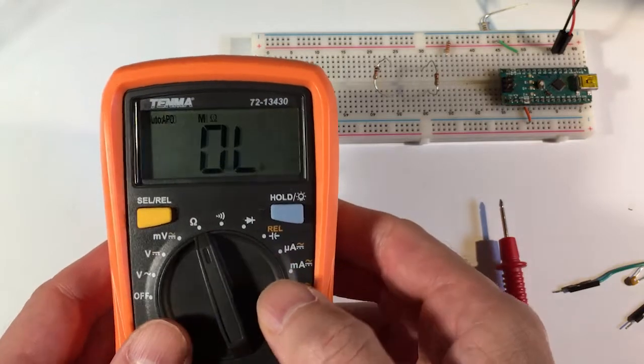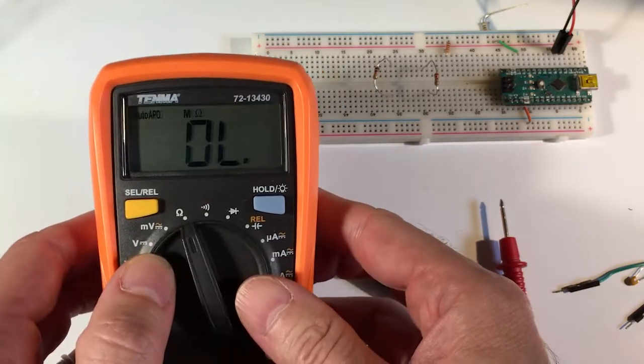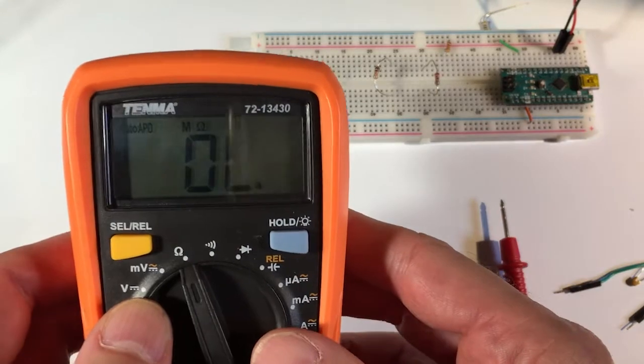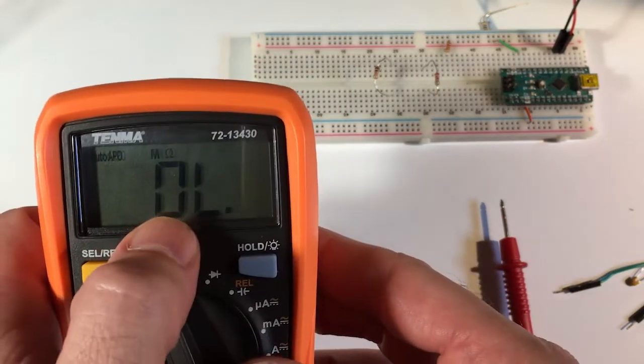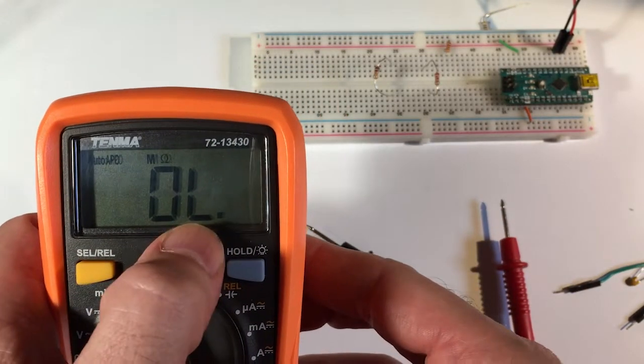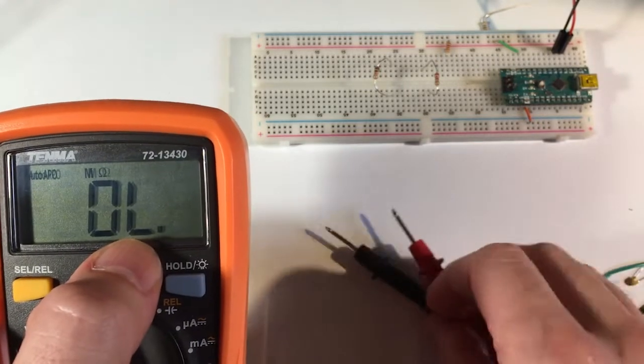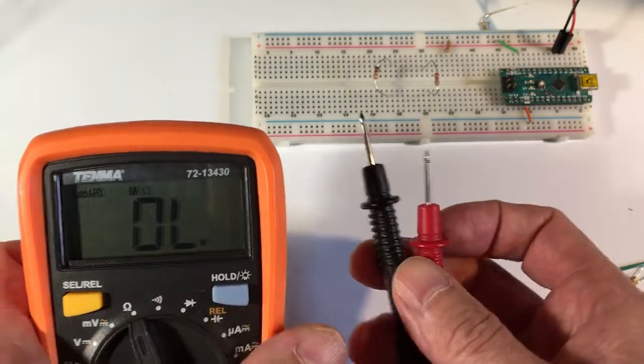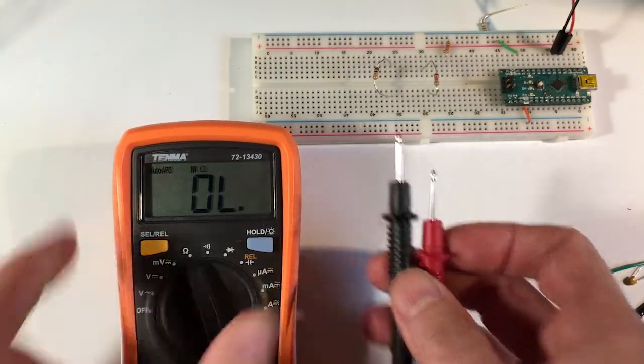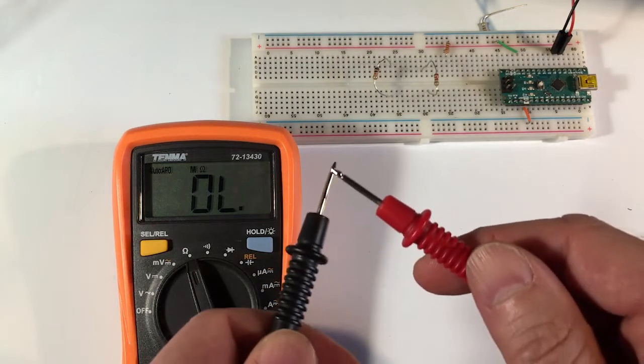This is an auto-ranging multimeter. It doesn't have ranges. Some of them have ranges that you need to set. Right now you can see it says OL on there, which stands for overload, and that makes sense because the terminals are not connected. Therefore it's thinking it has infinite resistance, so it's overloading.